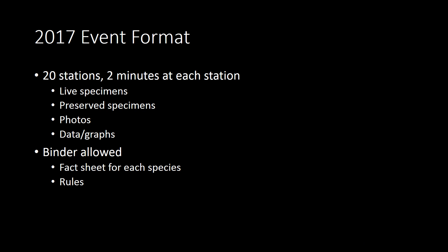For this year's event, it'll be similar to last year's event where there are 20 stations. Students will have two minutes at each station, and each station could have any of the following: live specimens — if live, it's probably going to be a plant. For most animals, there likely won't be live specimens. There may be preserved specimens, skins, skulls, or mountings. There could also be photos, data, or graphs, and I have an example question illustrating that. Students are allowed to have a binder that includes fact sheets for each species and the rules.